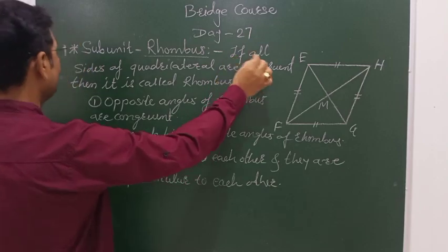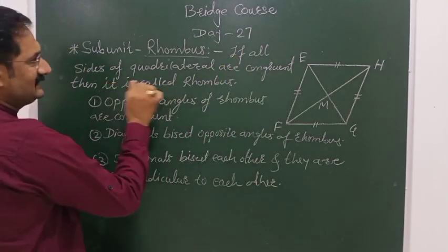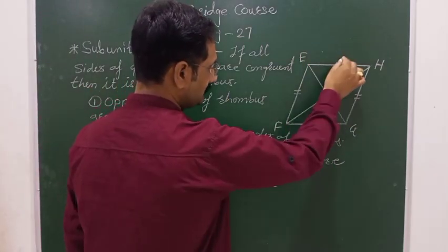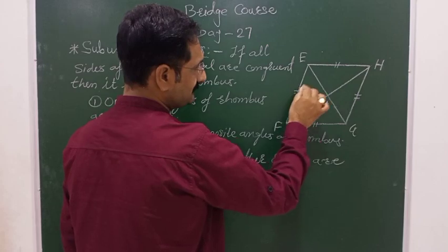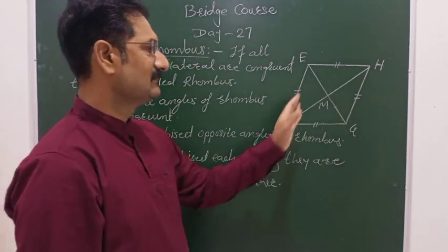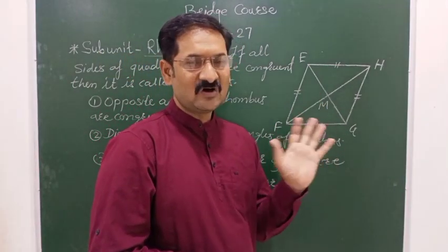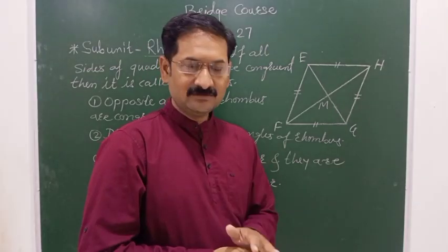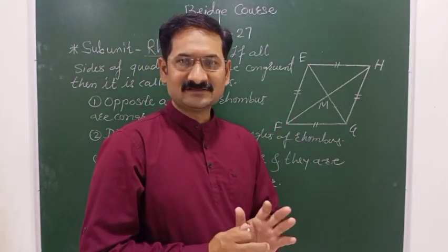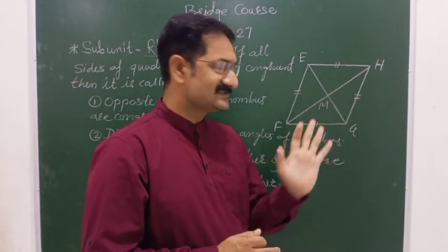Rhombus means all sides of a quadrilateral are congruent, then it is called a rhombus. We will now discuss the properties of a rhombus where all sides of the quadrilateral are congruent.